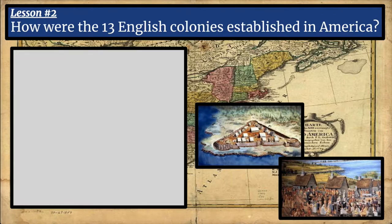Hello, ladies and gentlemen, and welcome to lesson number two in our freedom unit, where we really begin to tell the story of America from the beginnings of the English presence in America. The story has to do with freedom, and it also has to do with greed. Our left side essential question today is: how were the 13 English colonies established in America? I'll give you a moment to write that down.